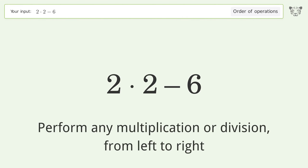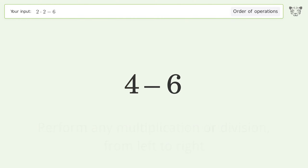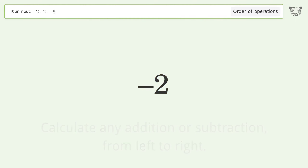First, perform any multiplication or division from left to right: 2 times 2 equals 4. Then, calculate any addition or subtraction from left to right: 4 minus 6 equals negative 2. And so the final result is negative 2.